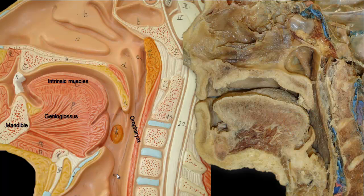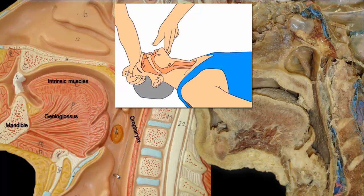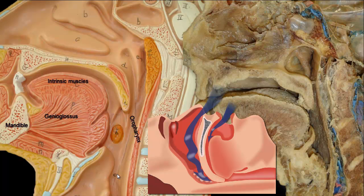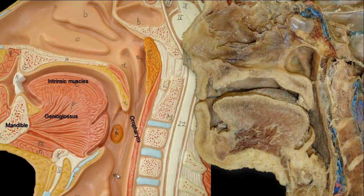Total relaxation of genioglossus occurs during general anesthesia; therefore, an airway is inserted to prevent the tongue from falling back. In an unconscious patient, the neck is extended and the chin is lifted, moving the tongue forward and opening the airway. Relaxation of genioglossus during sleep may result in obstructive sleep apnea and snoring. Severe retrognathia or deformity of the mandible pushes genioglossus backwards and results in snoring. In mild snoring, sleeping on your side rather than your back prevents the tongue from falling back. Avoiding sedatives and alcohol reduces the possibility of weakness of genioglossus.